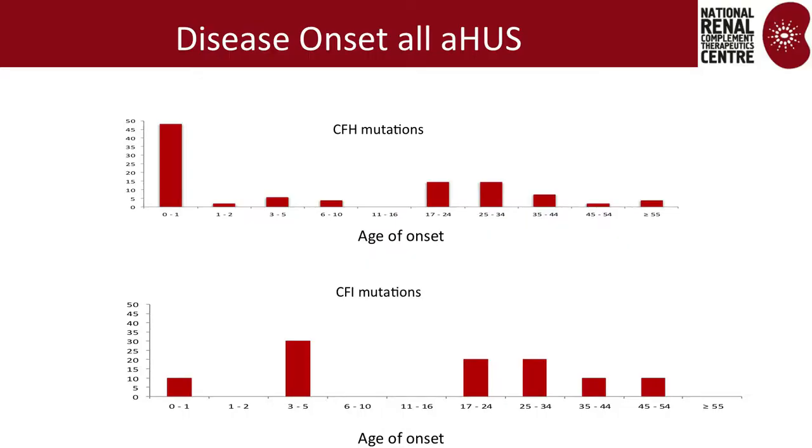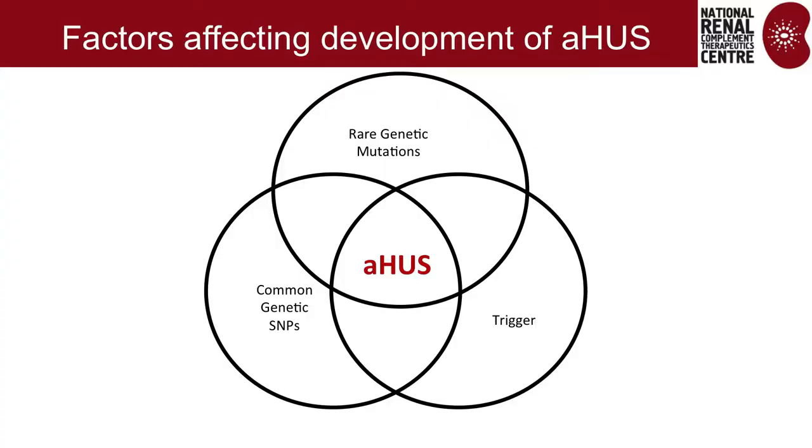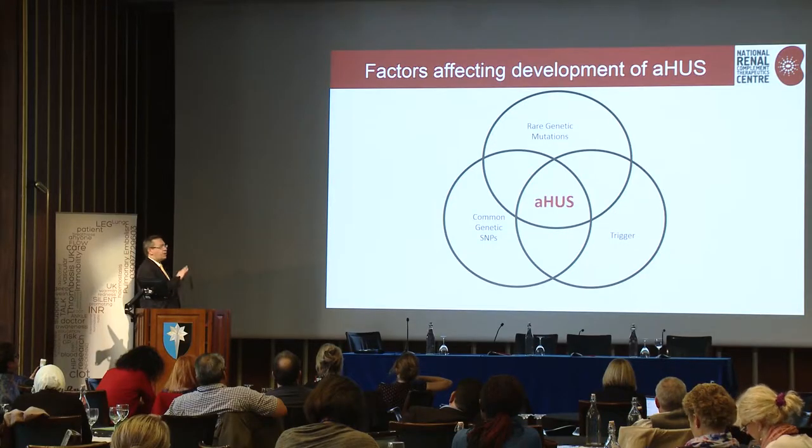Although this is a genetic disease, it's not like cystic fibrosis where if you get the mutation, you get disease. All people with factor H or factor I mutations can present throughout life — our oldest patient with a factor H mutation presented at about 83. There's a peak in the childbearing ages, which is pregnancy-associated. So you require more than just the genetic mutation; you also require a trigger, and some modifier genes.